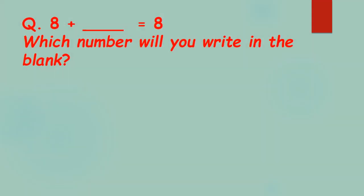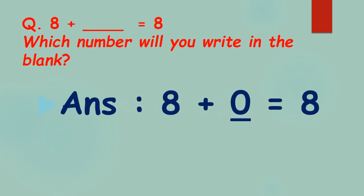See the question: 8 plus blank equals 8. Which number will you write in the blank? Can you find the missing number? Here we got the answer — the same number 8 — so 0 is the missing number. Adding 0 to a number gives the same number, so 8 plus 0 equals 8.